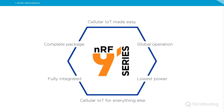The NRF9160 is a fully integrated SIP — system in package — for cellular IoT. It's very small: 10 × 16 × 1 mm, with an application processor, LTE-M modem, and more. This enables new applications, lowers the bill of materials, and delivers the lowest power — low power is in Nordic's DNA, built from scratch with power efficiency in mind. Designed and optimized for IoT, it makes new applications feasible with low power, smaller size, and improved coverage.